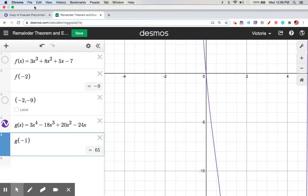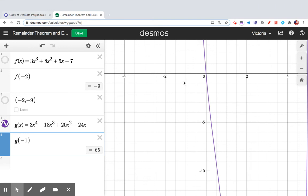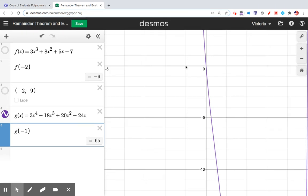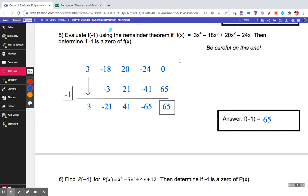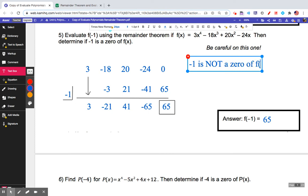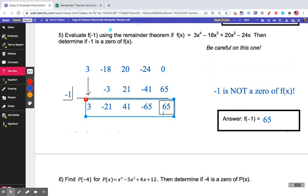So then the question says, is -1 a zero? Well, no, -1 isn't a zero because here's -1. It doesn't go through (-1, 0). So I have to answer that question also. -1 is not a zero of f(x).